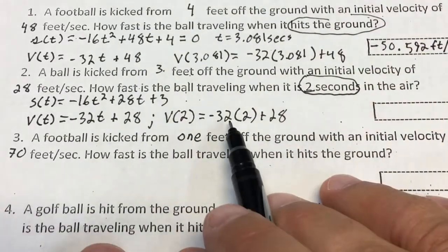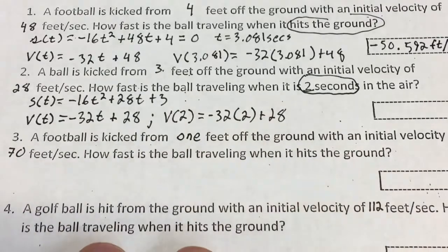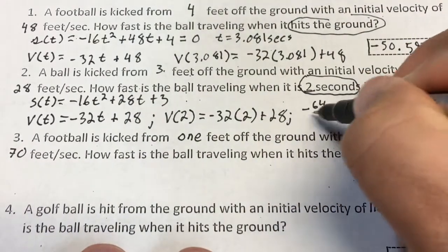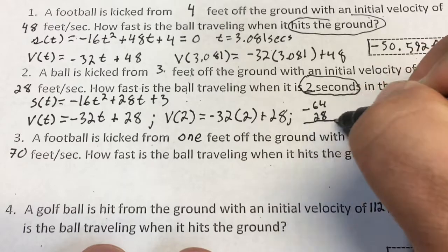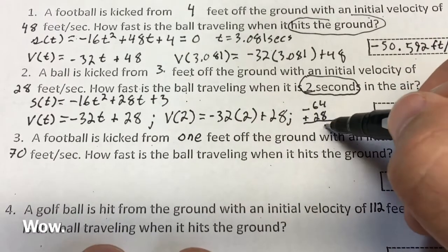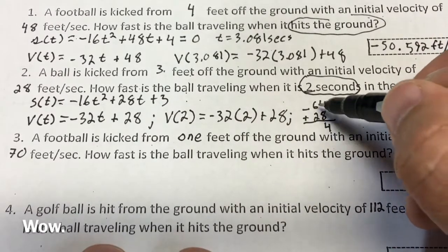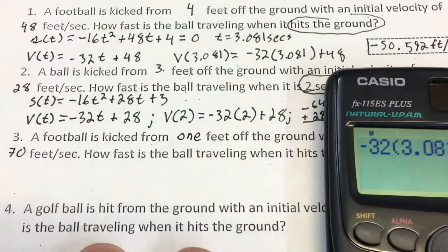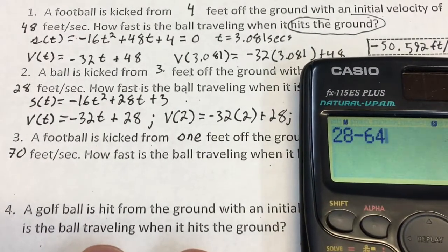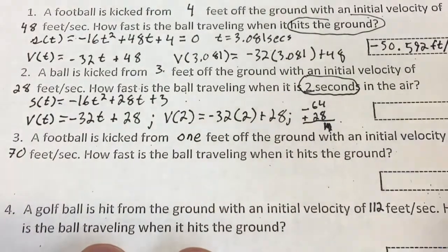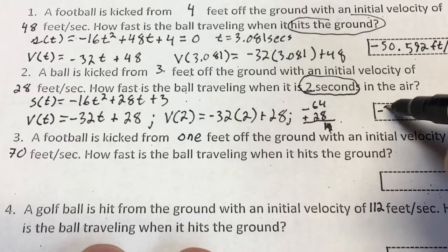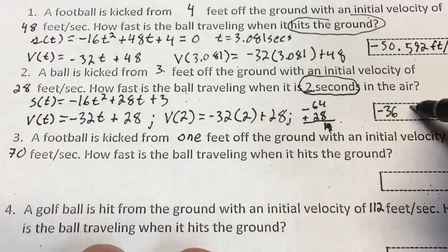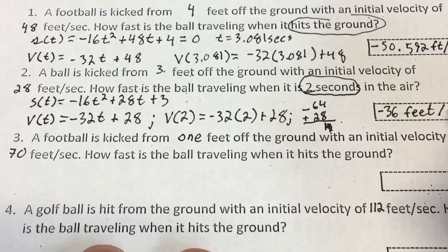I think I can do this without the calculator. That's negative 64 plus 28. Let me use the calculator just to be sure: 28 minus 64 gives me negative 36. So the velocity — how fast the ball is traveling at 2 seconds in the air — is negative 36 feet per second.